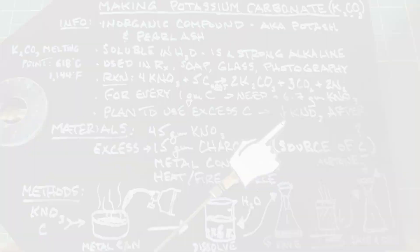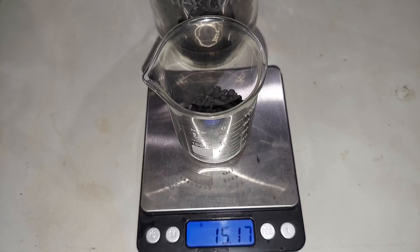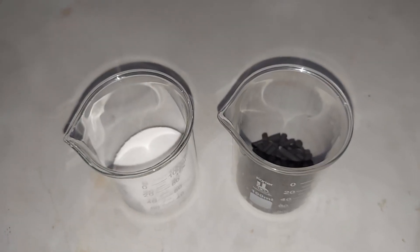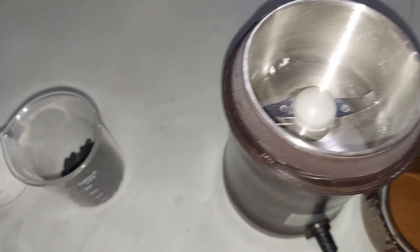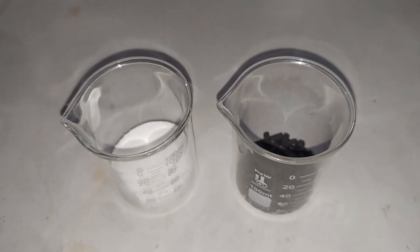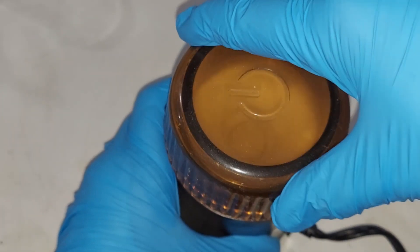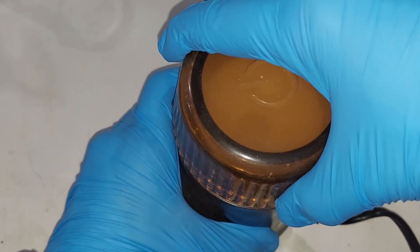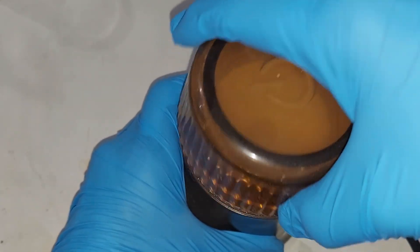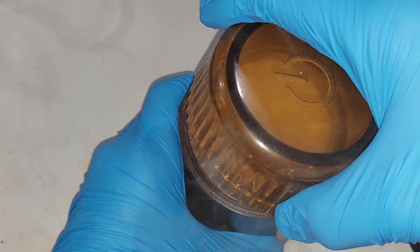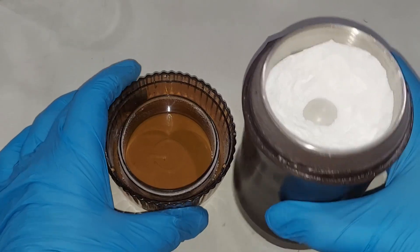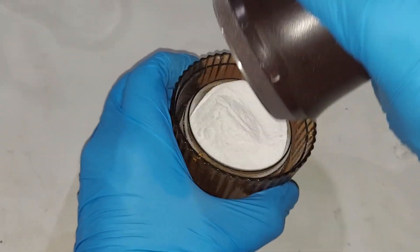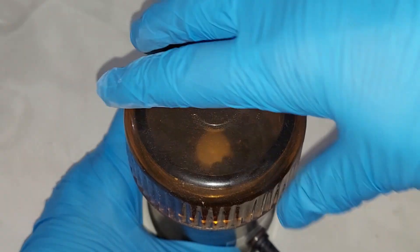45 grams of potassium nitrate pre-weighed, and approximately 15 grams of charcoal pre-weighed. Now that both are weighed, I'm going to grind them individually in this coffee grinder so that when we mix and burn them we get the best reaction we can. Grinding the potassium nitrate first, then grinding the charcoal.